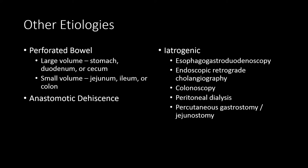If the patient has had a recent bowel operation or a bowel operation in their past, an anastomotic dehiscence or breakdown can result in variable amounts of free intraperitoneal air. There are also a number of different procedures that can cause both pathologic and benign free air. Multiple endoscopic procedures put the patient at risk for bowel perforation and can result in free air. Benign free air can be seen in patients undergoing peritoneal dialysis or who have recently had a percutaneous gastrostomy or jejunostomy catheter placed.